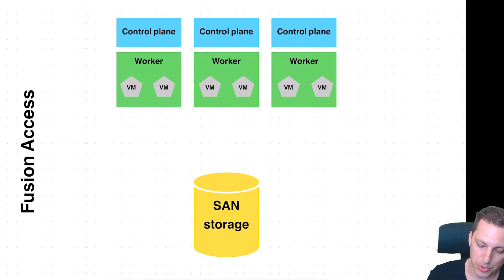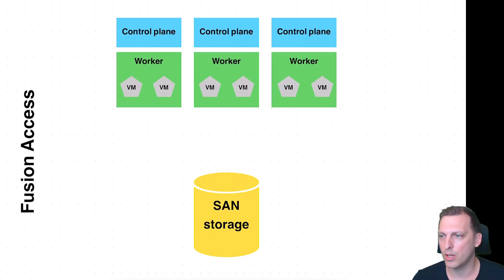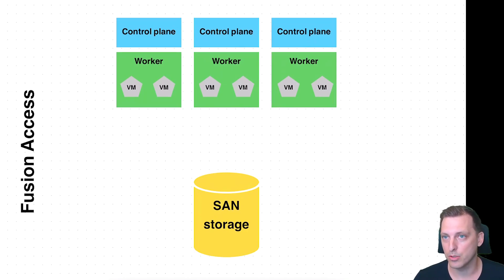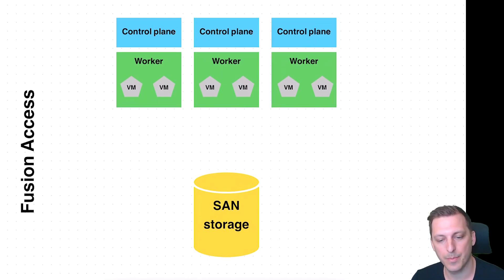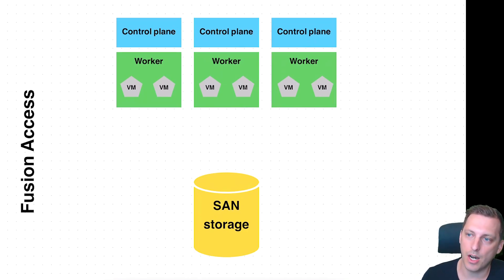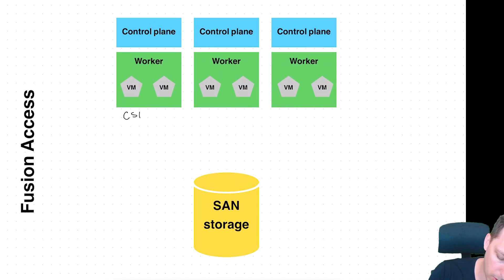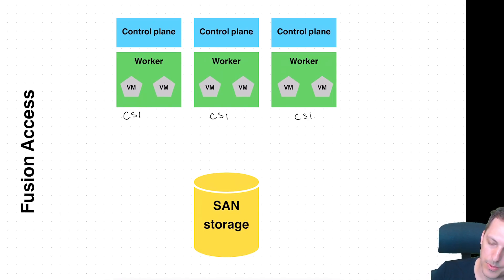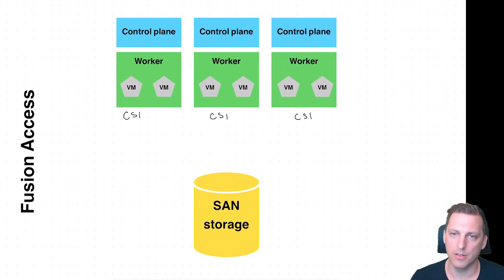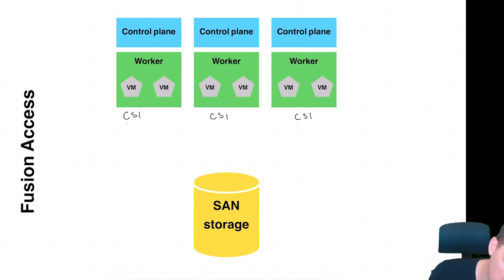When you go and talk to your SAN storage vendor, they would probably say they have a CSI driver for the Kubernetes world. A lot of vendors have opted to just providing a CSI driver. So you have your CSI, and now there's a storage class for VMs and it can request storage.